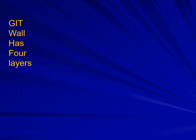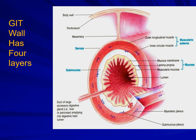The gastrointestinal tract wall has four layers. The innermost layer is called the mucosa. This mucosa is further divided into three layers. Number one, the surface epithelium, which consists of epithelial cells and is the lining of the lumen of the GIT wall. It varies in type from simple squamous cells to tall columnar cells depending upon the function of the part.